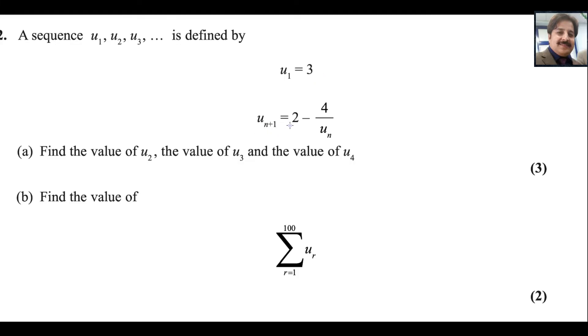Un+1 equals to 2 minus 4 over Un. Find the values of U2, find the values of U3 and value of U4.